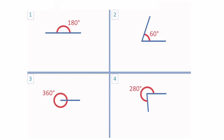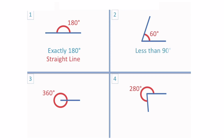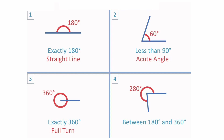The first one is 180 degrees, the second is 60 degrees, the third is 360 degrees, and the fourth is 280 degrees. Number one — 180 degrees — that is exactly a straight line. Number two — 60 degrees — that is less than 90, which is an acute angle. Number three — 360 degrees — which is a full turn. Number four — 280 degrees — which is in between 180 and 360 degrees, so it is a reflex angle.